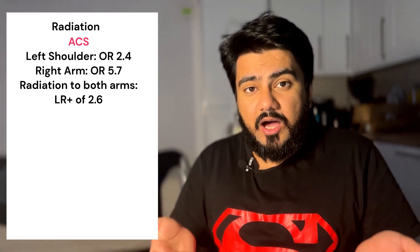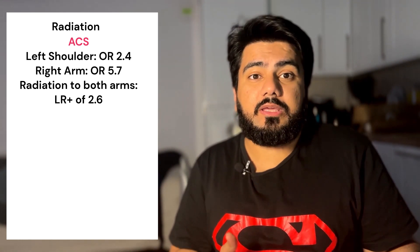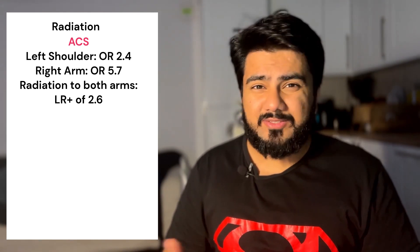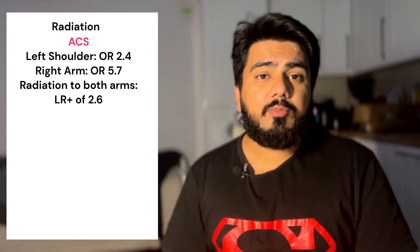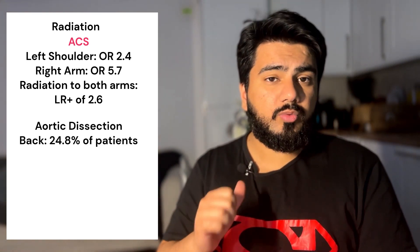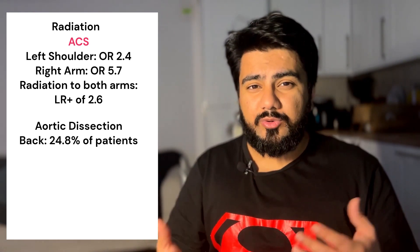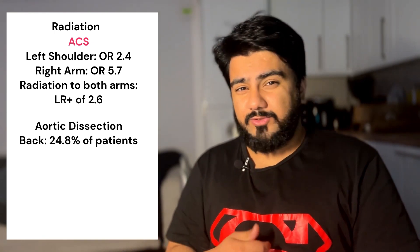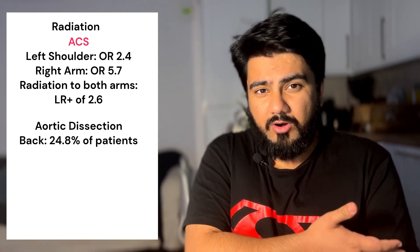The next thing in SOCRATES is going to be the radiation of the pain. Cardiac pain or pain from the pericardium can radiate towards your left or right arm, which has the highest likelihood ratio for acute coronary syndrome. Pain from ACS can also radiate towards your jaw, neck, upper abdomen, and even towards your back. Be wary of aortic dissection, where patients will complain of pain radiating towards their neck or through to their back, and the majority will also feel pain in their interscapular region. Pain from the esophagus can also radiate towards the left shoulder or left arm.